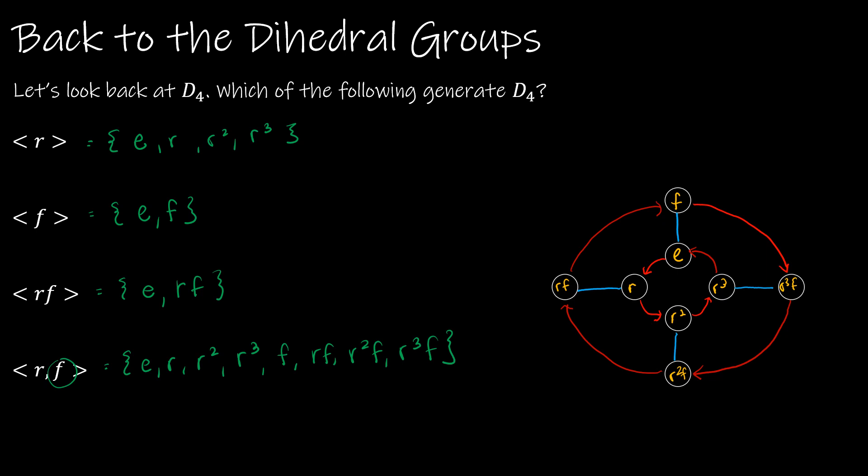And now we can see that we have actually generated the entire D4. So looking at R and F, a rotation and a reflection, I'm generating the entire set. And I'll leave it to you to see if there's any other combinations of rotations and reflections that generate D4.